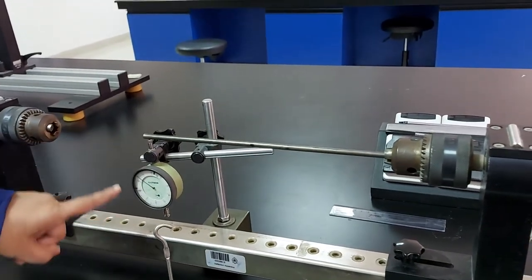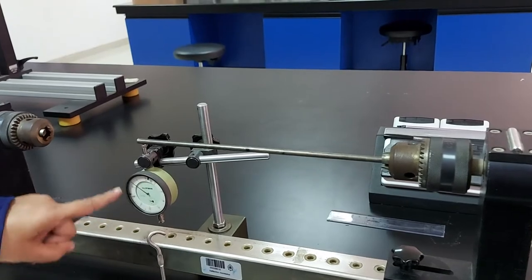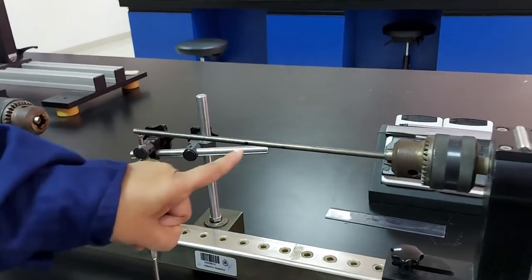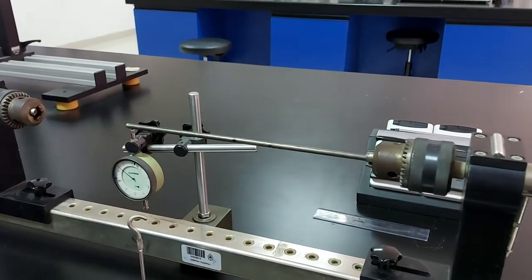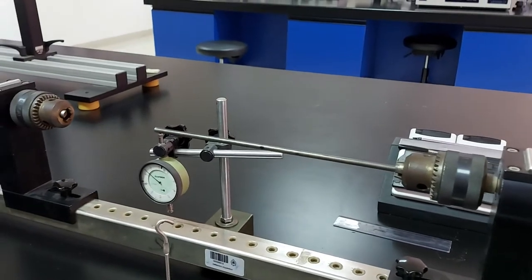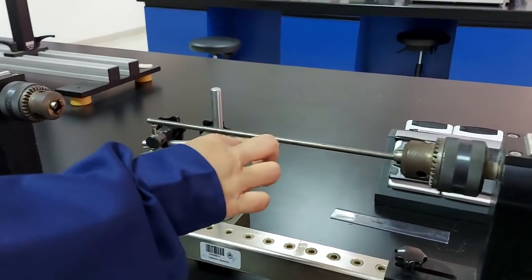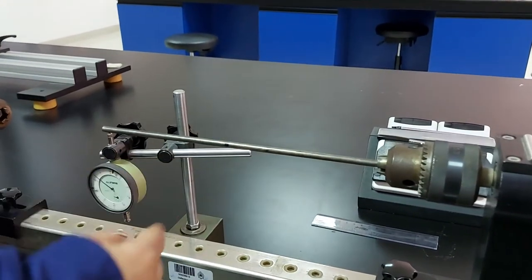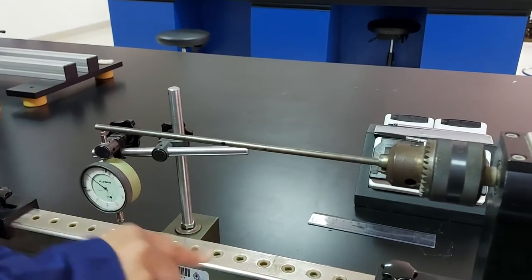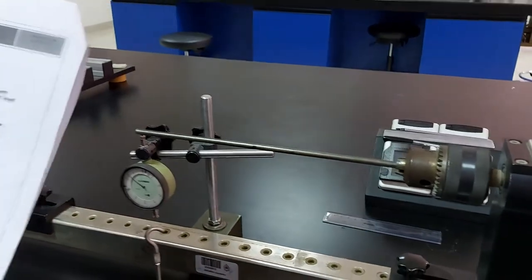In the free end we have fixed our deflection gauge to see the deflection in millimeters and I have already marked the midpoint. Here we are going to check center point load, we fix the load in the center point. We will be keeping on increasing the load 1 newton, 2 newton, 3 newton, we will be entering into the reading.